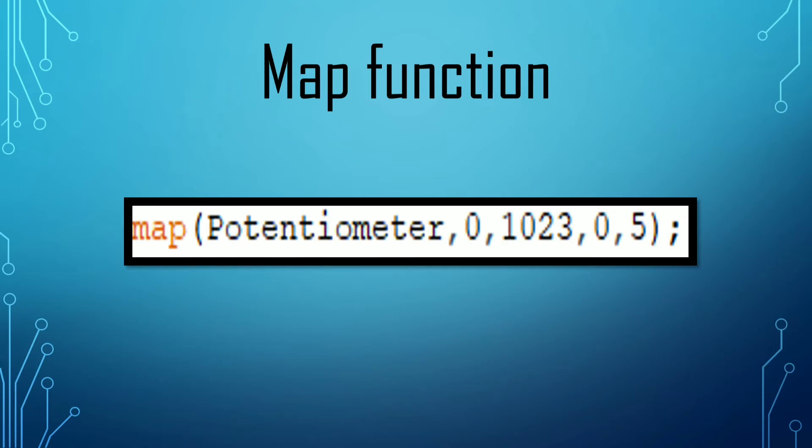And then we have to write the values in which we have to change it, which is 0 to 5V. So basically, 0 will be converted to 0 volts and 1023 will be converted to 5 volts.